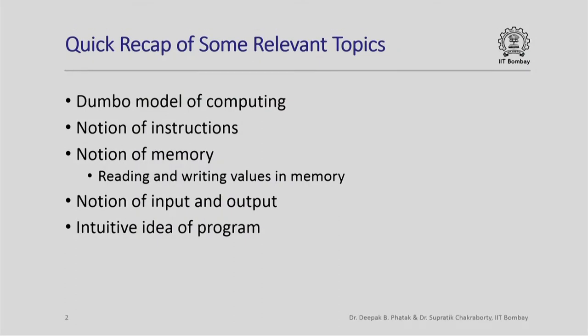Hello and welcome. This lecture is about the structure of a simple C++ program. Here is a quick recap of some topics we have studied earlier that are relevant to this lecture. We have already seen the Dumbo model of computing, the notion of instructions, memory where we can write and read values, the notion of input and output, and an intuitive idea of a program as a sequence of instructions that Dumbo can execute. We will now build upon this and see what a real C++ program looks like and what its different components are.